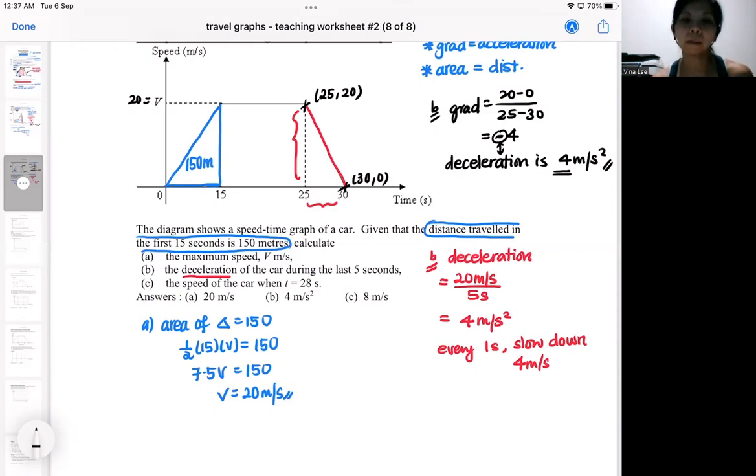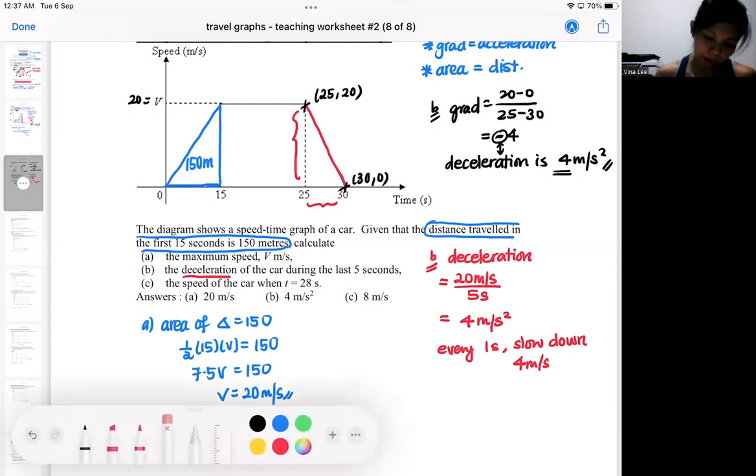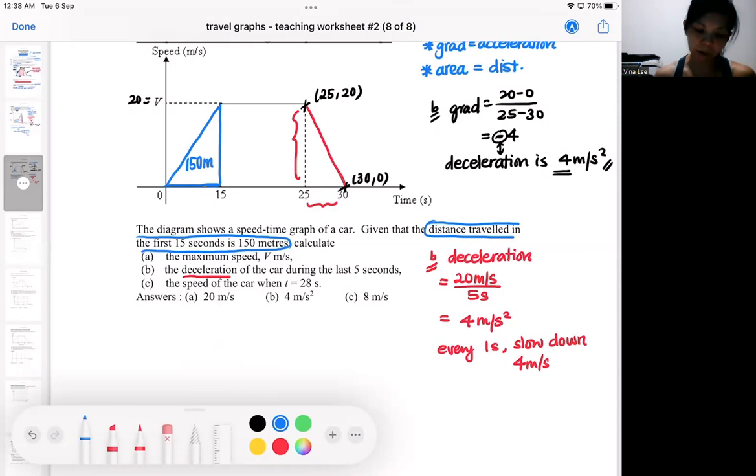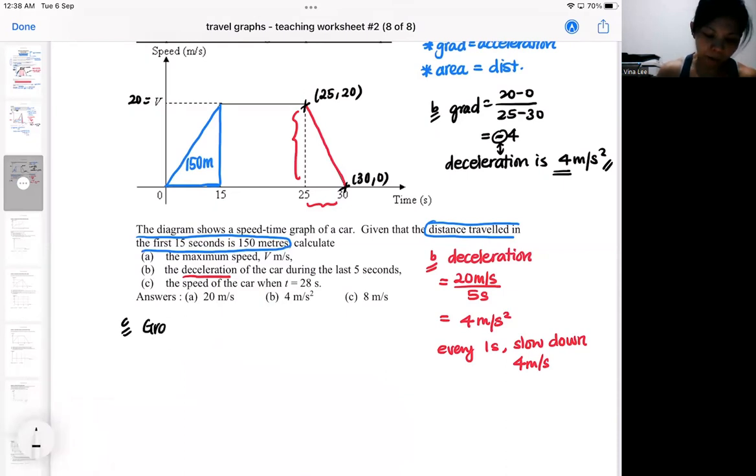The main part for this question is part C. I would like to find the speed when it is 28. I think I will erase the previous part first so I can do the similar triangle method. Or I can do the gradient method. I will show the gradient method, then I will show the similar triangle method. So how am I going to use the gradient method? So this is 28.